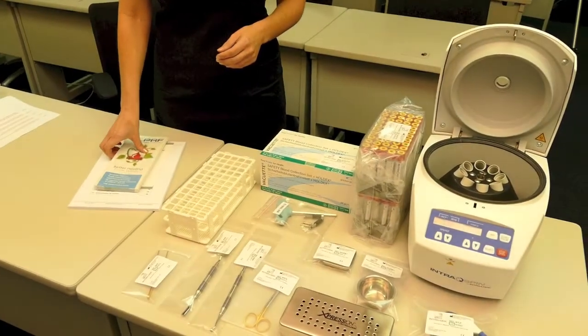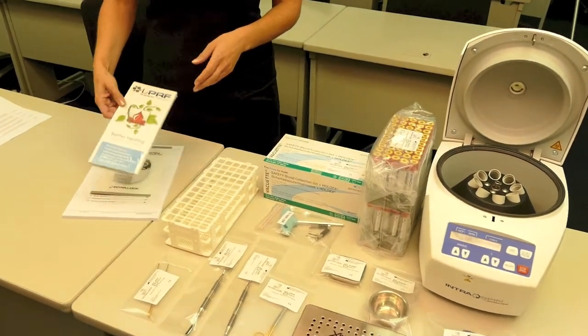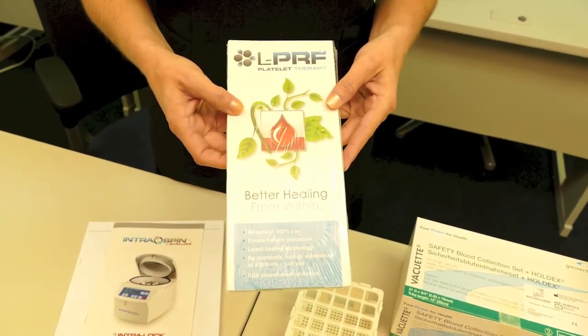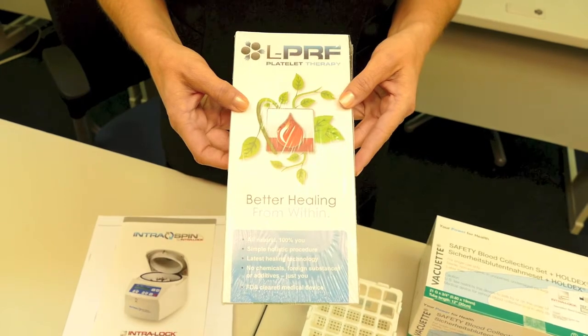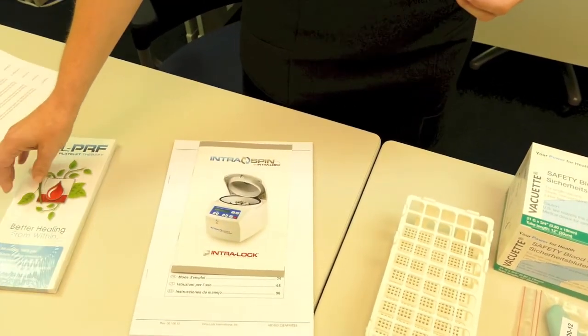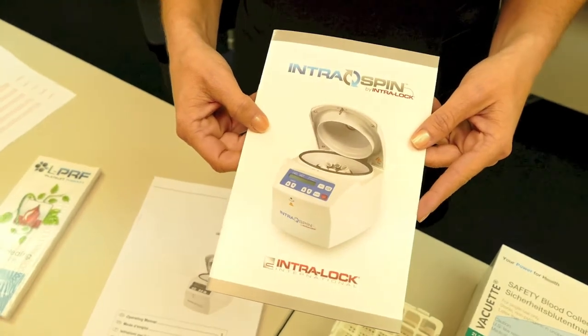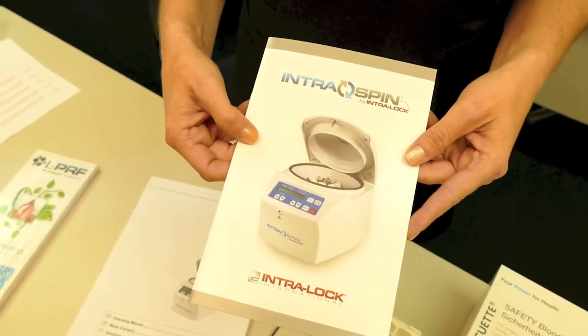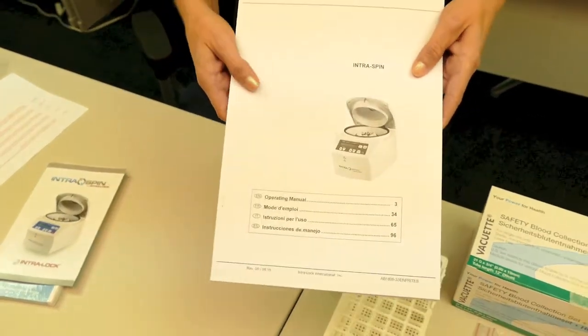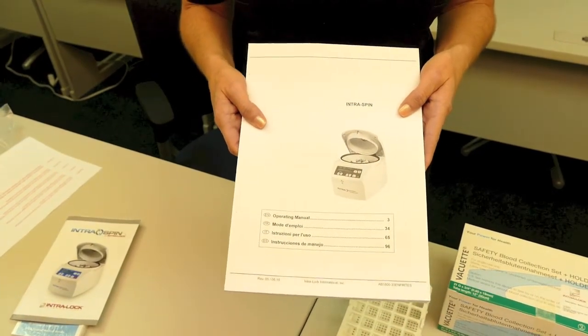To conclude our basic installation of the IntraSpin system, let's review a couple of things. You have your patient education brochures. This is a great tool for educating the patient on the benefits of LPRF platelet therapy. Those are available for reorder with Intraloc. You have your FDA cleared protocol manual. Please follow this precisely. And again, your operating manual. This is beginning to end everything you need to know about using the IntraSpin system.